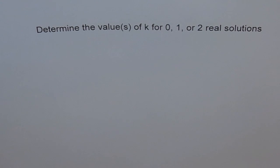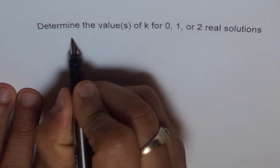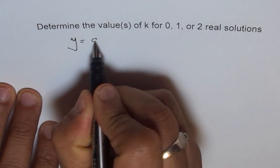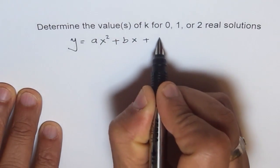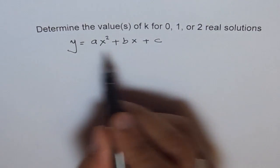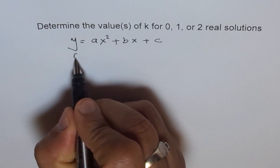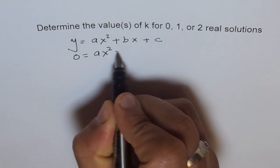Hello, as you know, a quadratic equation can have 0 solutions, 1 solution, or 2 real solutions. There is the formula — if I write an equation y equals ax squared plus bx plus c, this is a quadratic equation. Now, when we say solutions, we really mean when 0 equals what — what value of x gives us 0?